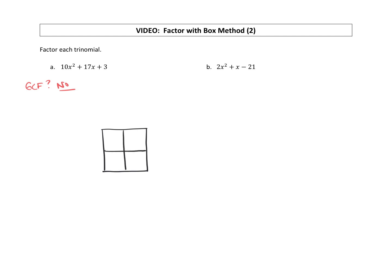So let's go ahead and draw our box. We are going to put the first term, 10x squared, into the top left box. We're going to put the last term, positive 3, in the bottom right box.